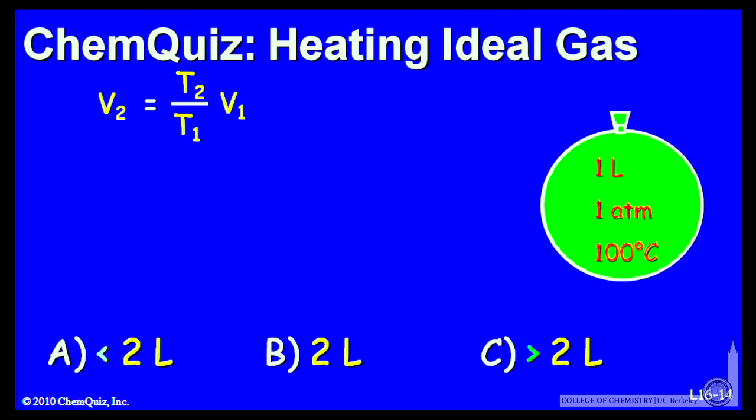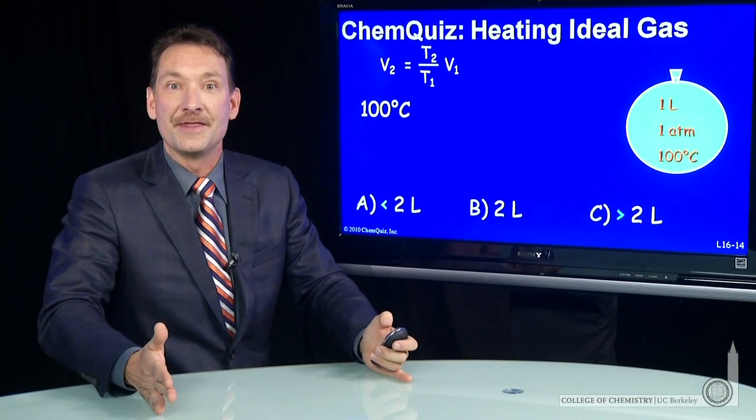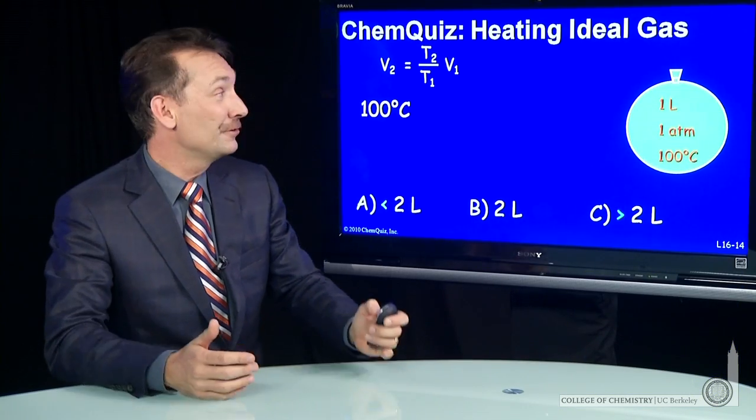The lesson to learn here is that the volume changes by the ratio of the temperatures, but the temperature has to be in the absolute scale. Gases and the ideal gas law operate on the absolute temperature scale.